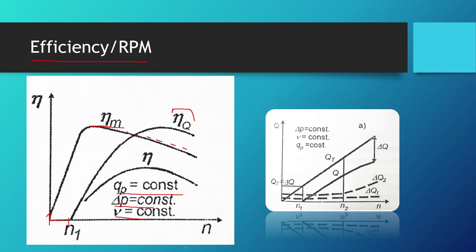As we saw in the lesson on flow, the flow efficiency also grows with increasing RPMs up to a point and then starts to decline. Running the pump at low RPMs or at very high RPMs both result in poor efficiency. So there is a certain optimal RPM range for the best efficiency.